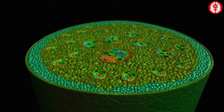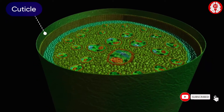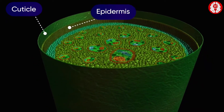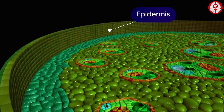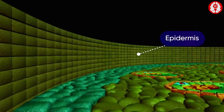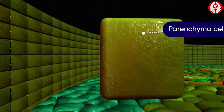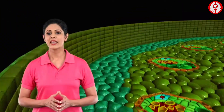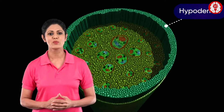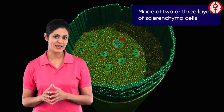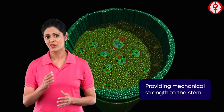A thin rigid lining of cuticle is present surrounding the epidermis. The epidermis consists of compactly arranged thin-walled parenchyma cells. Inner to the epidermal layer is the hypodermis, which is made of two or three layers of sclerenchyma cells providing mechanical strength to the stem.